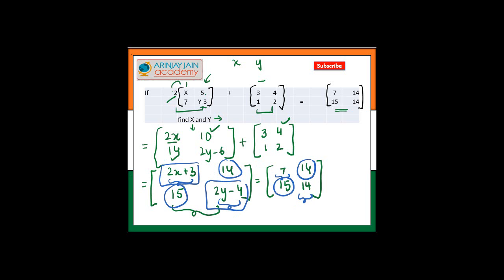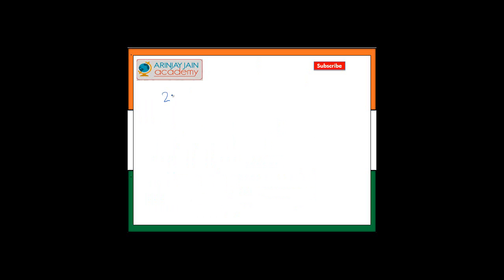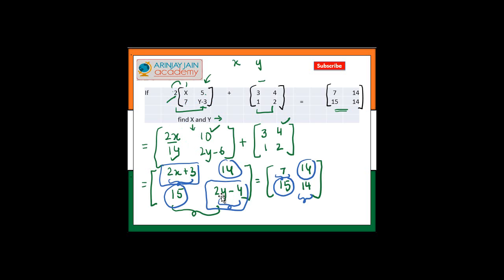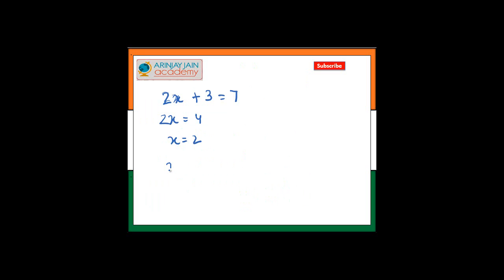So you are given 2x plus 3 is equal to 7 or 2x is equal to 7 minus 3 or x is equal to 2. If I go back to the second equation, I had 2y minus 4 is equal to 14. 2y is equal to 18, which means y is equal to 18 divided by 2 or 9.